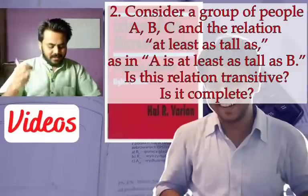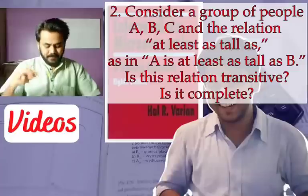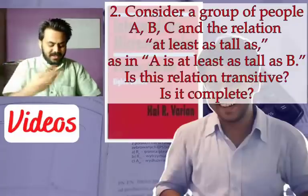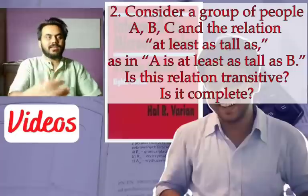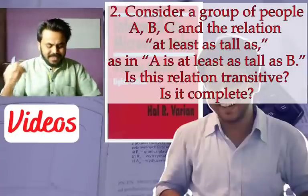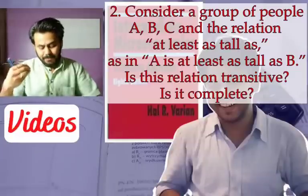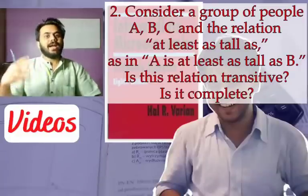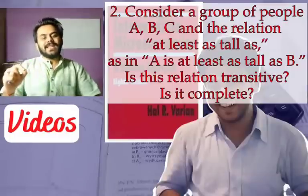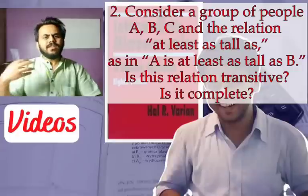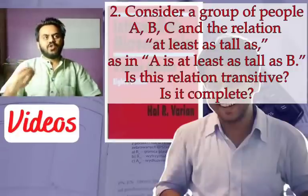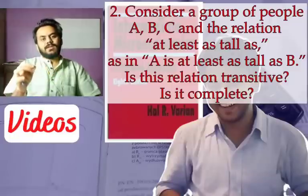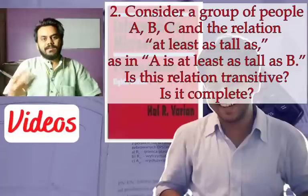The next question considers a group of people A, B, and C and the relation 'at least as tall as' — for example, A is at least as tall as B. Is this relation transitive? Without losing generality, if A is at least as tall as B, and B is at least as tall as C, then we can say A is at least as tall as C. For example, if Steve is at least as tall as John, and John is at least as tall as Jimmy, then Steve is definitely at least as tall as Jimmy. So it's transitive.